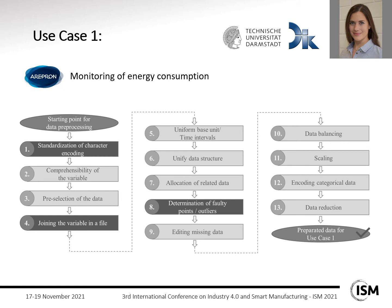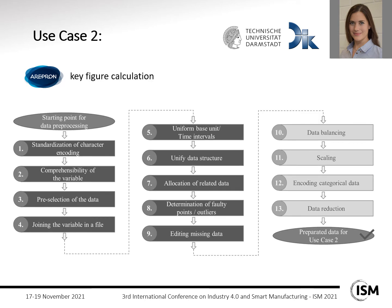Let's start with use case one, which is a relatively straightforward use case: the monitoring of energy consumption. In this use case, the exceeding and falling below the target range of the power consumption of a machine is to be monitored. With the help of this information, an initial assessment of the machine's functionality can be made and the valid sawing process can be ensured. For this, we need only three steps: standardization of character encoding, joining the variables in the file, and determination of faulty points and outliers.